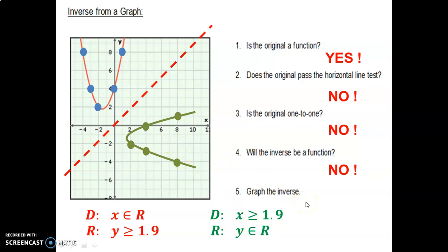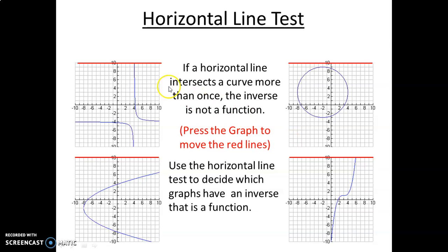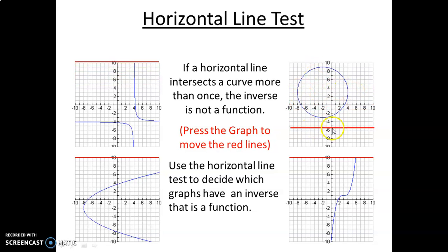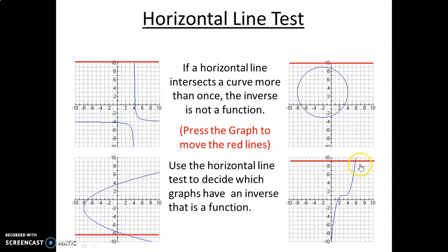Here are some examples of inverse functions graphed with their originals. Notice when an original crosses the line y equals x, the inverse also crosses right at that point — clearly mirror images. For the horizontal line test: this first graph — the horizontal line always hits only once, so its inverse will be a function. This second one — the horizontal line hits twice many times, so its inverse will not be a function. This third one — horizontal line hits only once every time, so even though the original graph is not a function, the inverse will be. And this last one — horizontal line always hits only once, so the inverse will be a function.